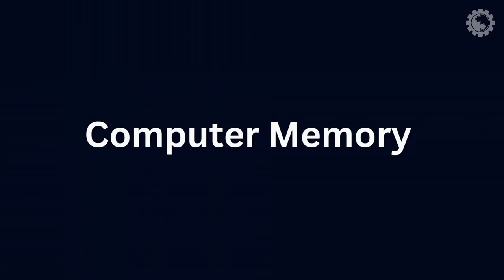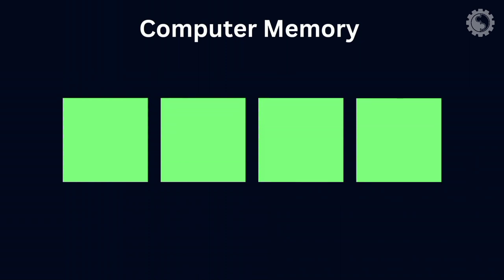Hi there, welcome to this video about computer memory. In computers, memory stores data as a series of electrical charges. Each charge represents a single bit, which is the smallest unit of information in a computer.